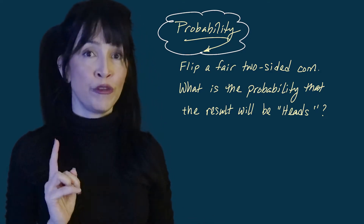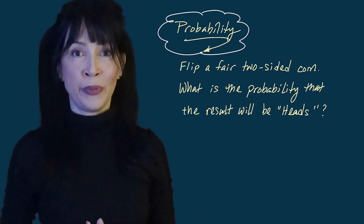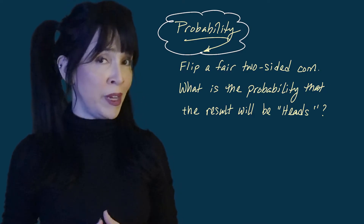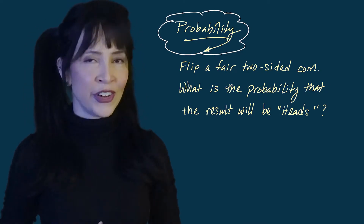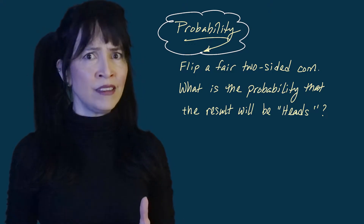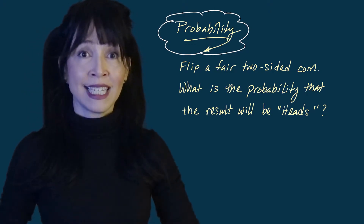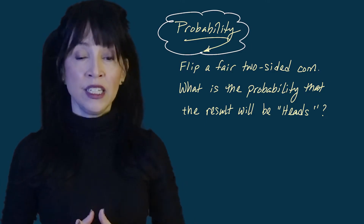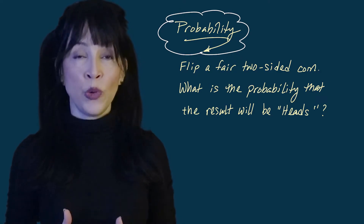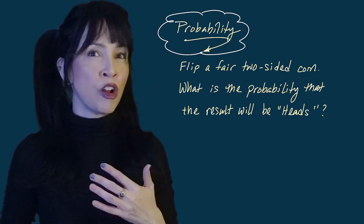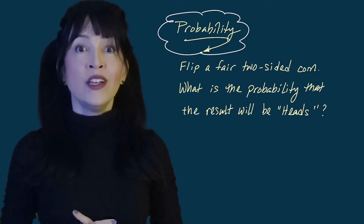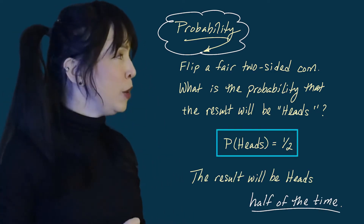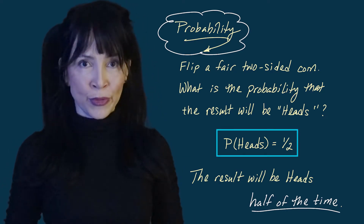This may not seem relevant when you're flipping it once, but suppose you are approaching a new exciting table game in Las Vegas. What if I told you the last 98 out of 100 people won the game? That tells you that you have a better chance because there is this long-run frequency sort of thing going on. So the result will be heads half the time, and I'm going to write that as P(heads) = 1/2.